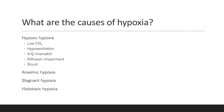Number four: histotoxic hypoxia. This is where the PaO2 is normal, the oxygen content in the blood is normal, and it is delivered to the tissues. However, cells are unable to utilise the oxygen at the mitochondrial level.